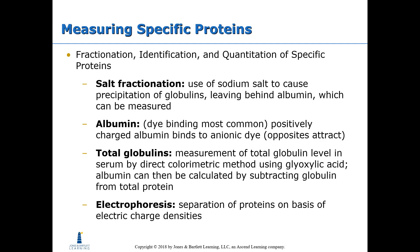Sometimes we need to measure specific proteins. Salt fractionation uses sodium salt to cause precipitation of globulins, leaving behind albumin to be measured. Albumin is most commonly measured by dye binding — the positively charged albumin binds to an anionic dye, and the color change is measured. Total globulins can be measured by direct colorimetric method using glyoxylic acid. Albumin can then be calculated by subtracting globulins from total protein. Electrophoresis separates proteins on the basis of electric charge densities.